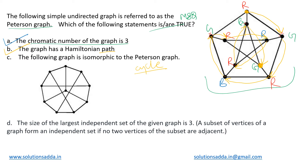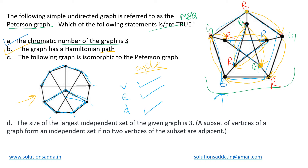The third option says that the given graph is isomorphic to Peterson's graph. To check isomorphism, we verify the number of vertices — same for both — and the number of edges — also the same. We then check that each node has degree 3, and there are 10 nodes total, all of degree 3, matching the original graph. We can map the lower polygon to the inner star and the outer 5 nodes to the outer 5 nodes of the original graph. We find they are indeed isomorphic, so option C is also true.